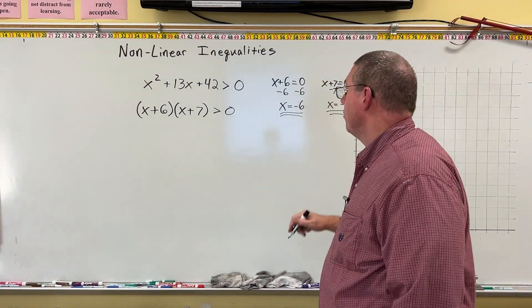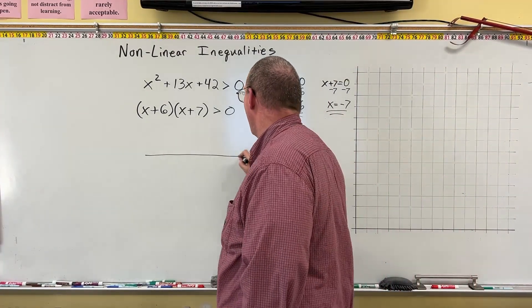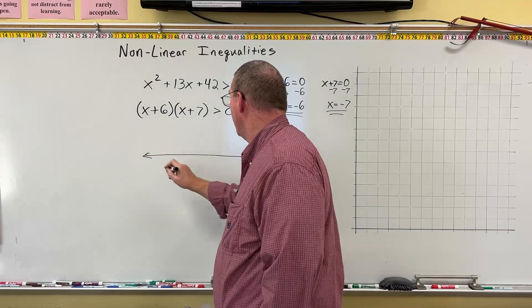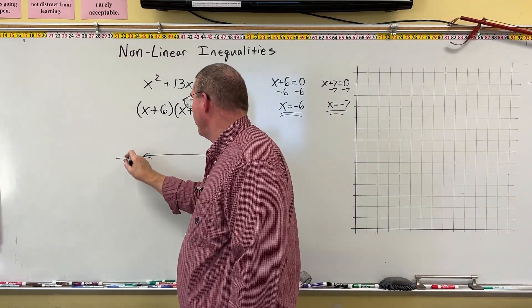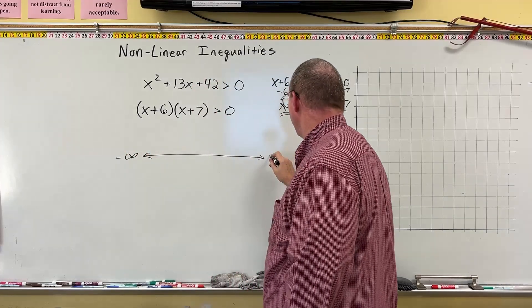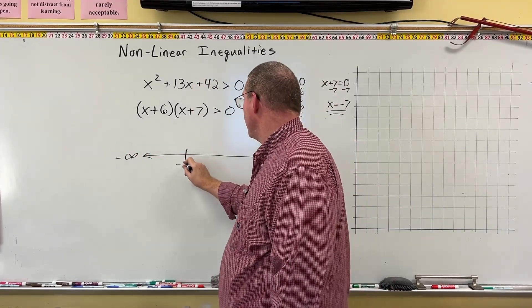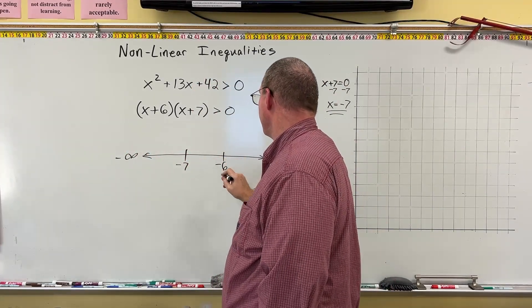And so now I have my two critical values. So now I'm going to draw a horizontal line. I'm going to put negative 6 and negative 7 here. Let me put my negative infinity and my infinity. Negative 7 is here. Negative 6 is here.